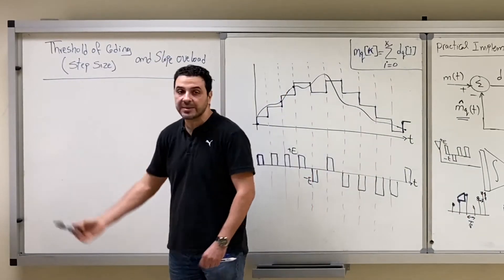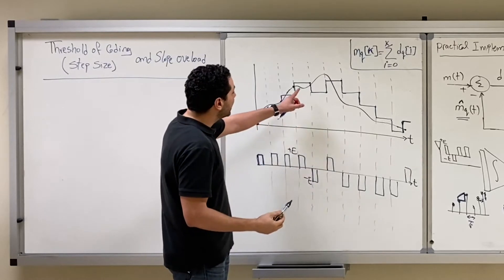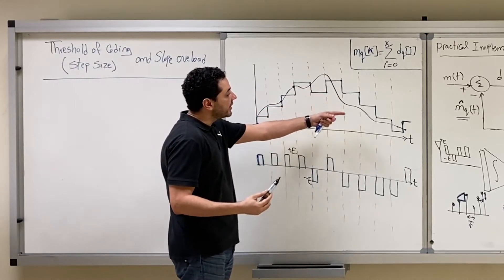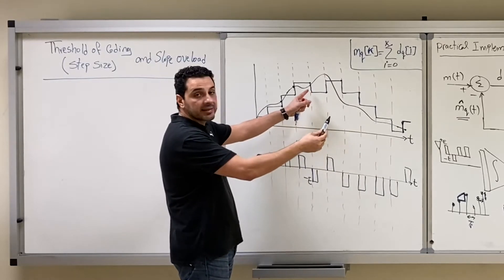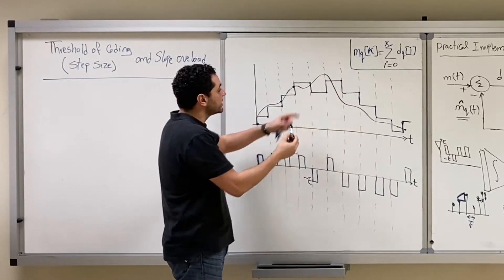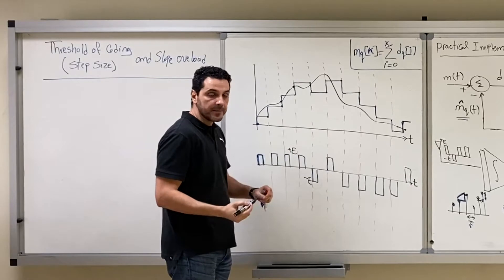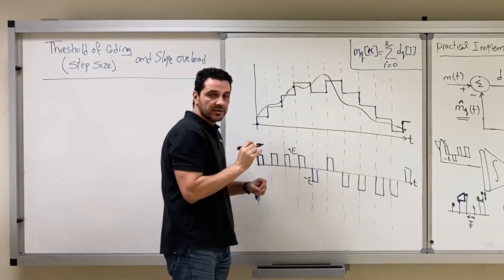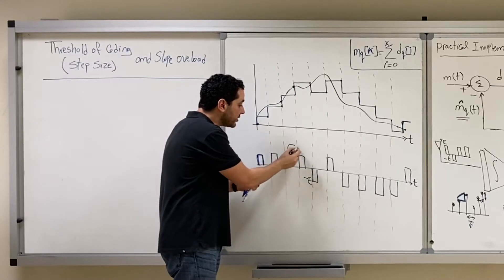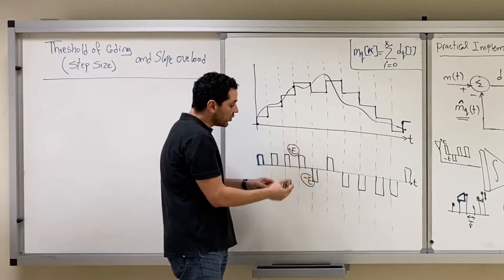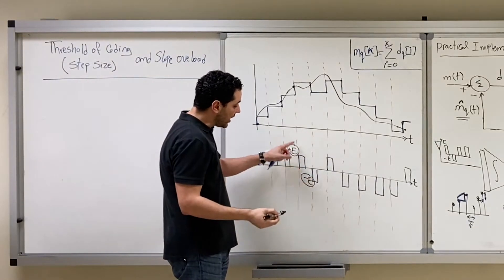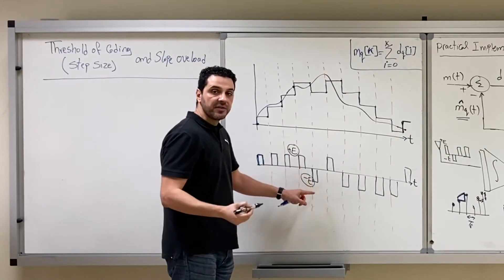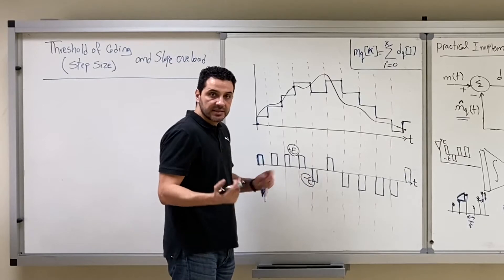Threshold of coding is basically the step size that we use when we reconstruct the signal at the receiver, or also when we do the estimation at the transmitter — the signal m-hat-q of t. This is the step size by which we go up or go down, related to the level e and minus e. When we use the integrator, we go up by e multiplied by the length of the pulse, or we go down by negative e multiplied by the length of the pulse. This is the step size.